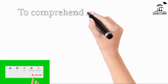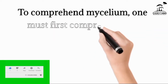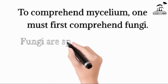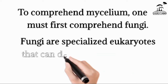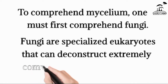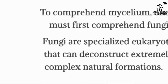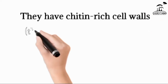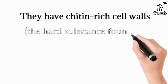To understand what mycelium is, you also have to know what a fungi is. Fungi are specialized eukaryotes that can decompose extremely complex natural formations — that means they break down organic matter or decompose substances. Their cell walls are rich, like that of insect exoskeletons, and they reproduce asexually by spore production or spore discharge.